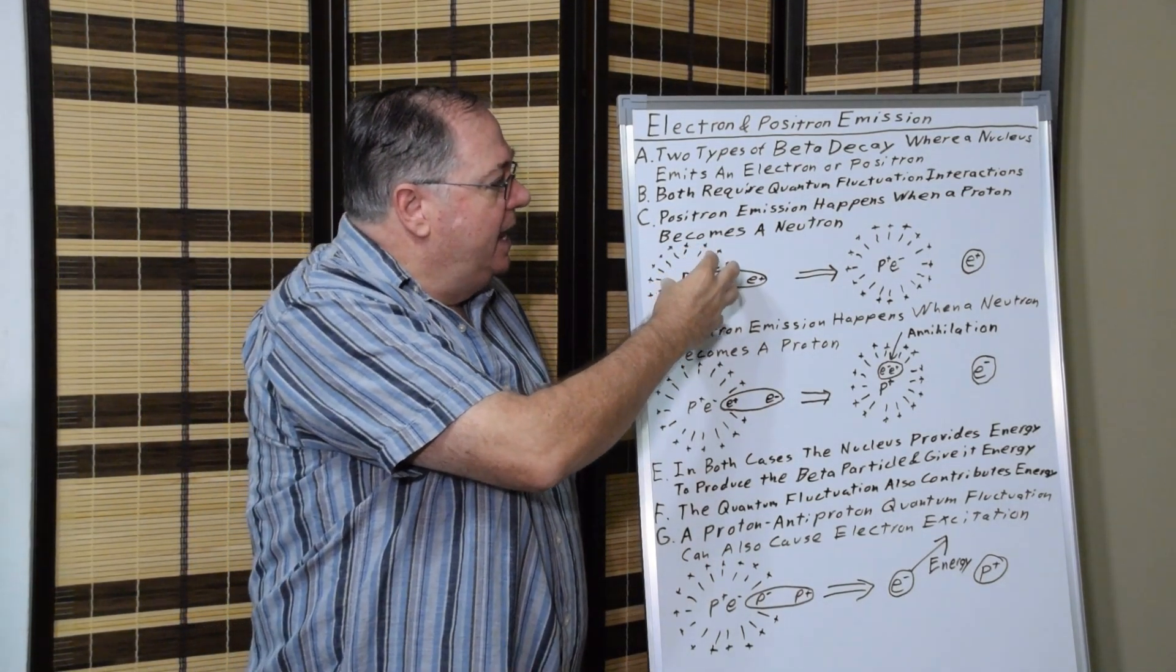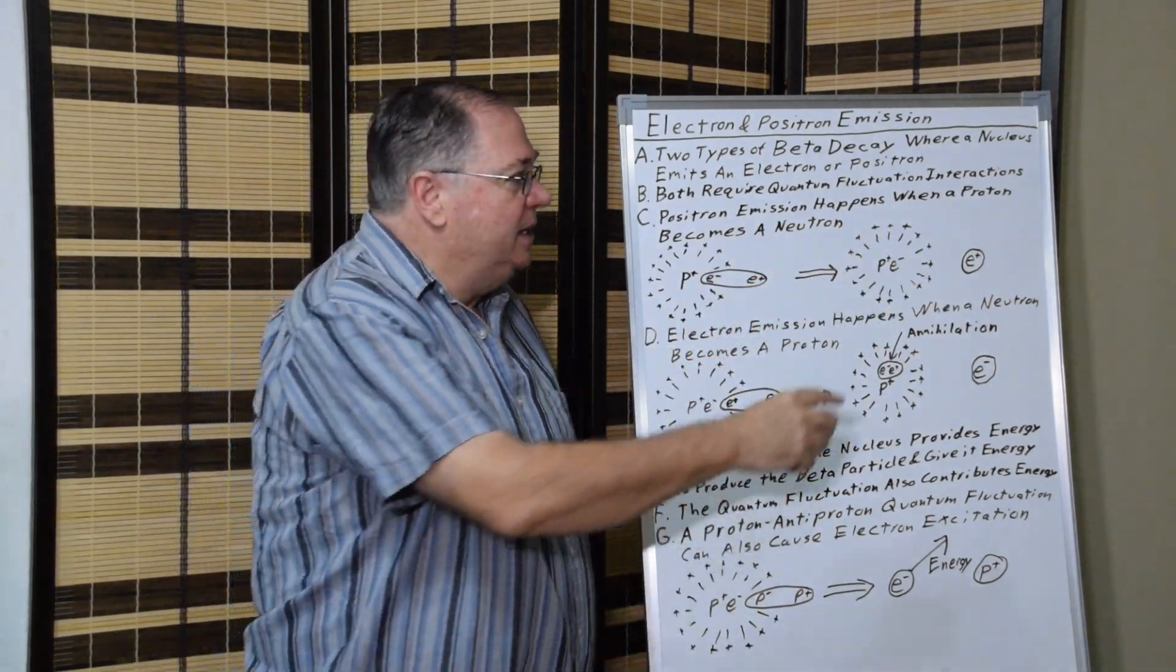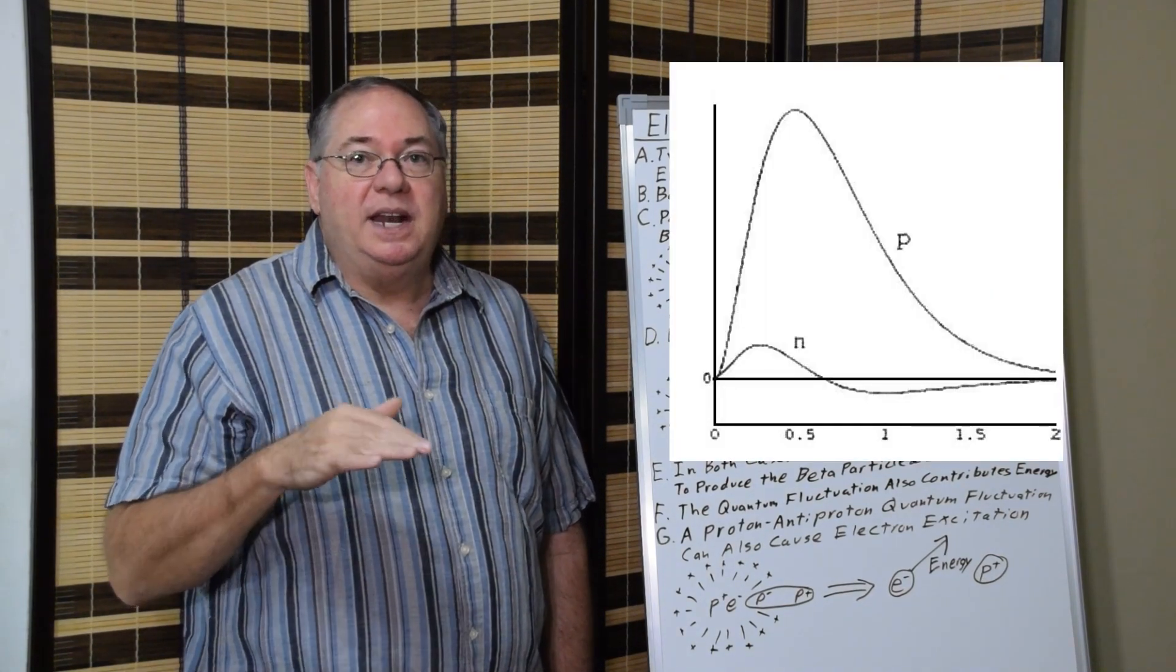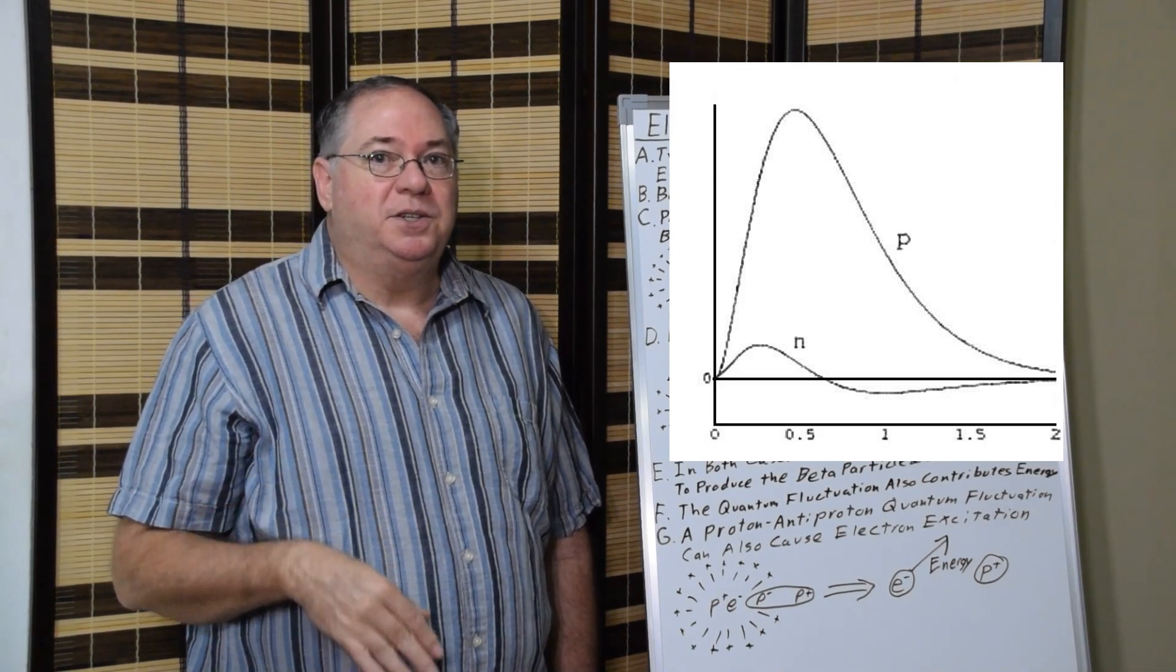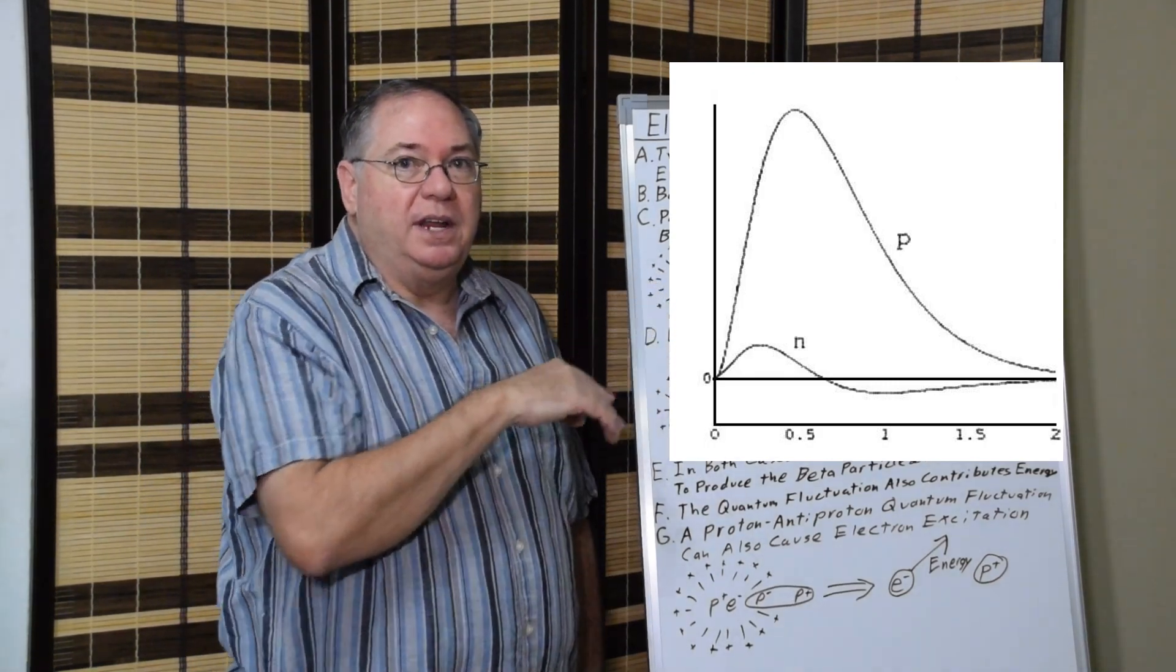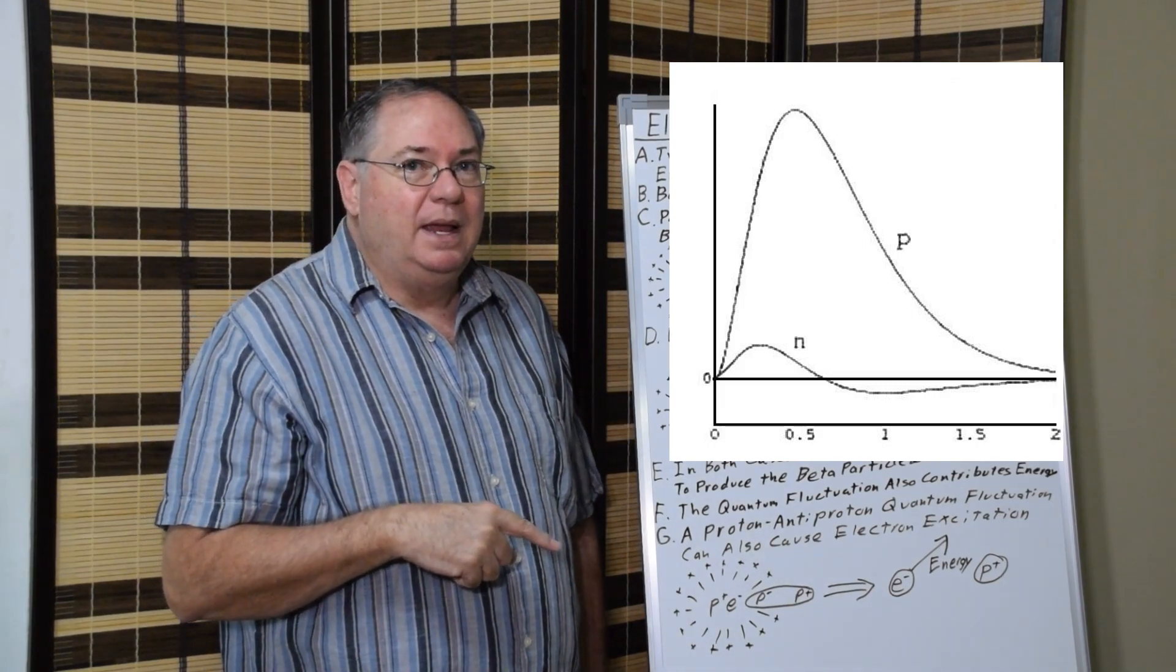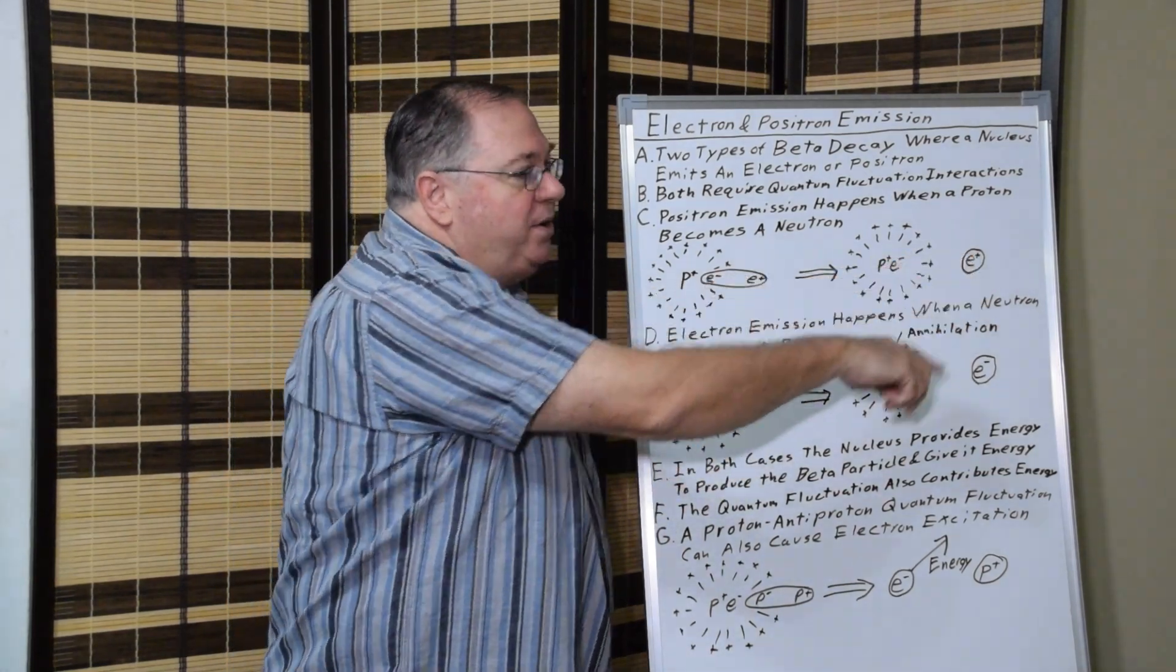Then the electron gets captured, converting this to a neutron, and the neutron has a shell around it. Because it has a charge distribution, it's not perfectly zero. It has a charge distribution, even though it's lower energy than the quantum fluctuation. It actually goes positive and then negative. I'll put an image up on that. And then the positron becomes free.